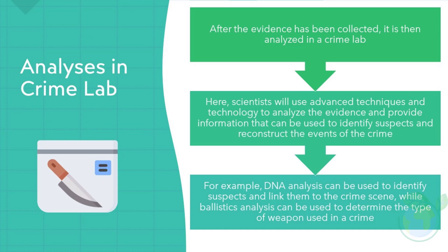Analyses in Crime Lab. After the evidence has been collected, it is then analyzed in a crime lab. Here, scientists will use advanced techniques and technology to analyze the evidence and provide information that can be used to identify suspects and reconstruct the events of the crime. For example, DNA analysis can be used to identify suspects and link them to the crime scene, while ballistics analysis can be used to determine the type of weapon used in a crime.